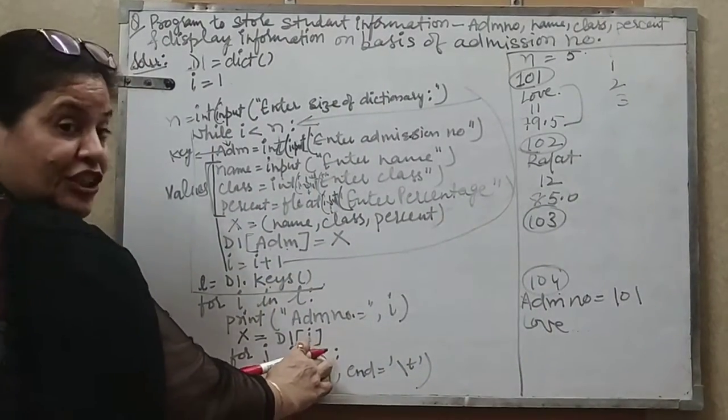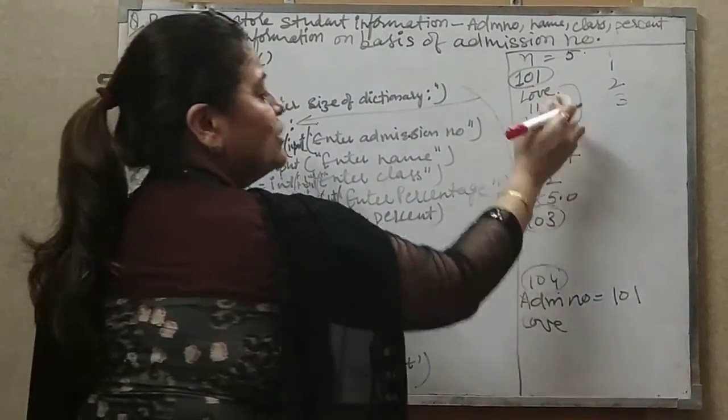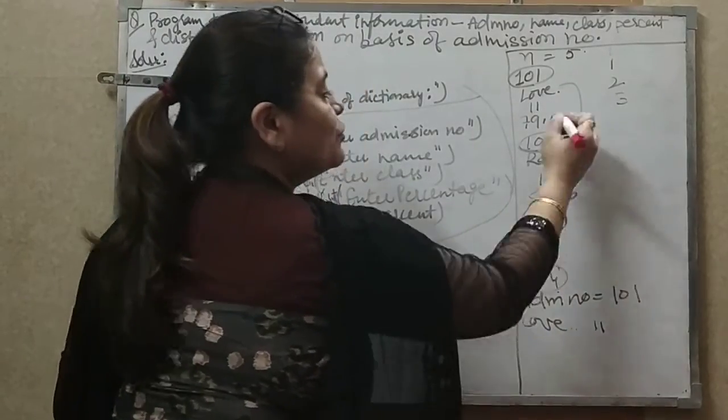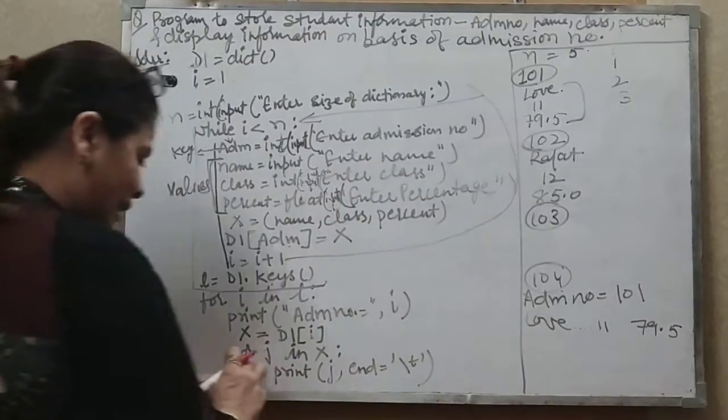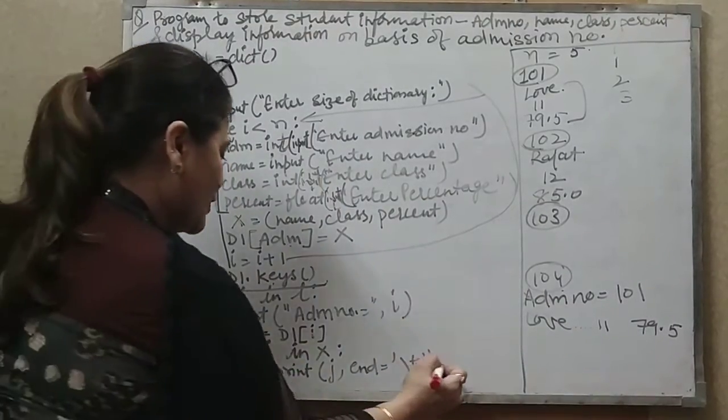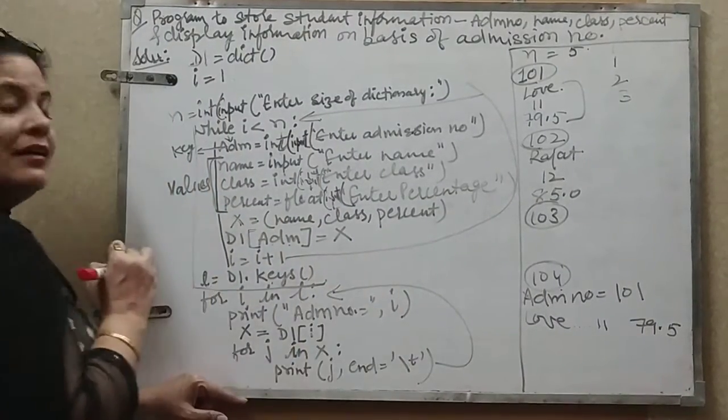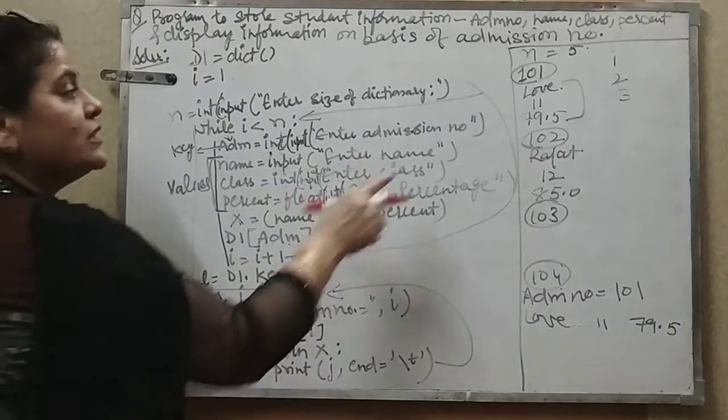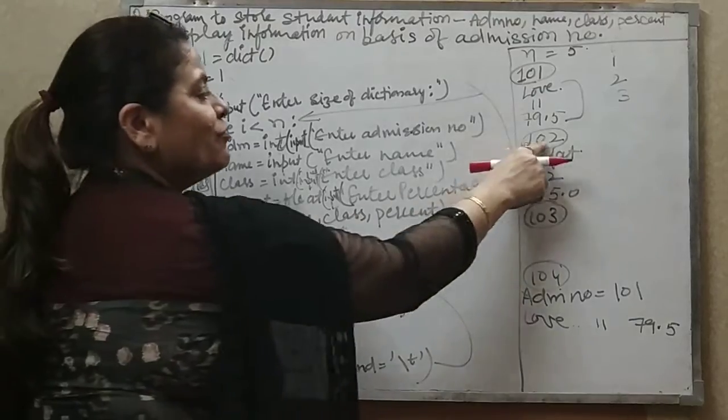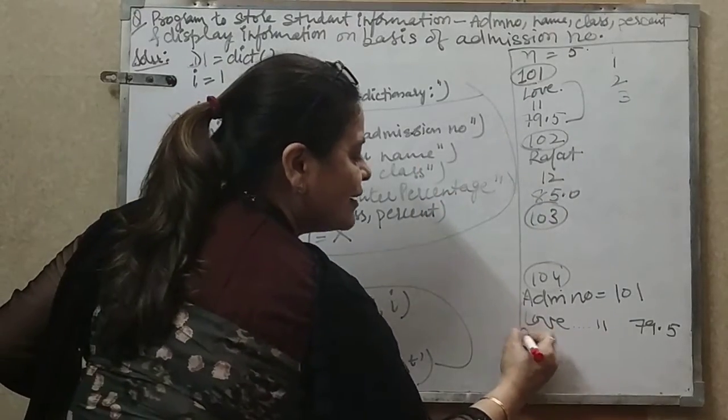After that again move inside the j loop only and give the next value as 11, then uske baad percentage which is 79.5. Now this inner loop is finished. After this inner loop finishes, it will go back to the outer loop. Outer loop me i chal raha tha. i ke ander first key value li thi 101. Now which one will it take? 102.